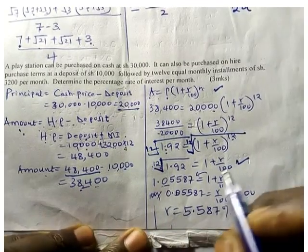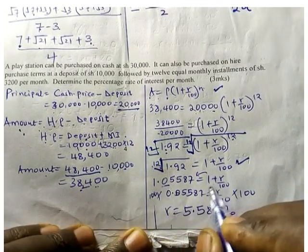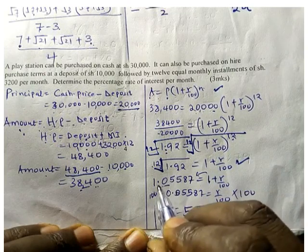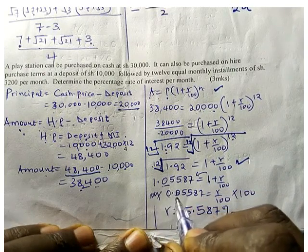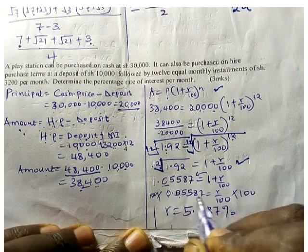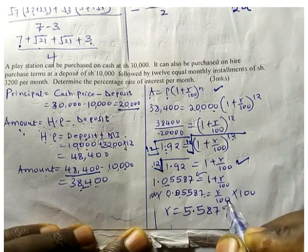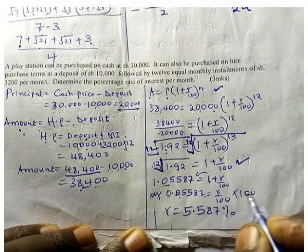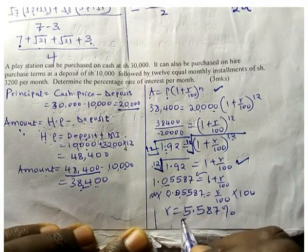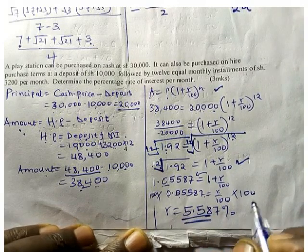From there, we have like terms together, which equals 0.05587, which equals r/100. So you multiply by 100 on both sides, and you find that r is equal to 5.587 percent.